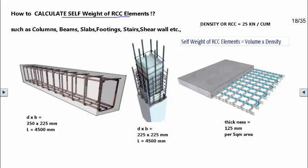The RCC elements that we normally come across in small applications or even small residential buildings are columns, beams, slabs, footings, stairs, shear wall, etc.